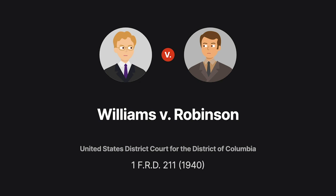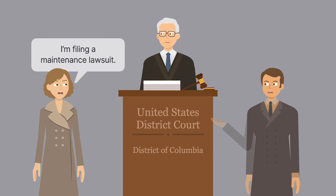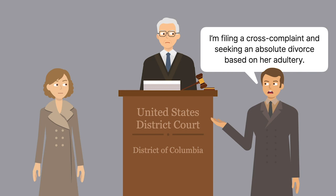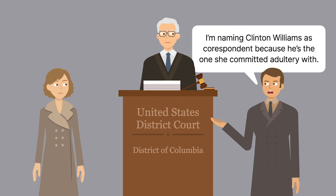In Williams v. Robinson, we explore how courts determine whether a counterclaim is compulsory or permissive. Samuel Robinson's wife filed a maintenance lawsuit against him. Robinson answered and filed a cross-complaint seeking an absolute divorce based on his wife's alleged adultery. Robinson also named Clinton Williams as co-respondent, alleging that Williams committed adultery with Robinson's wife.